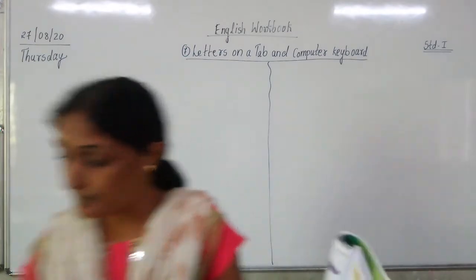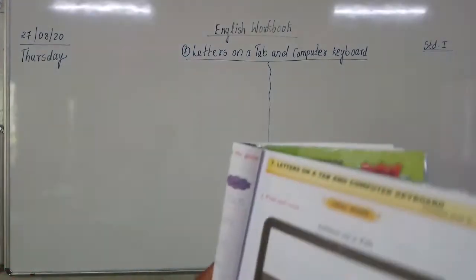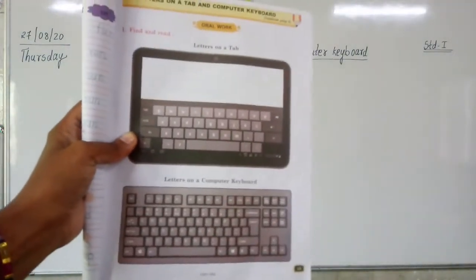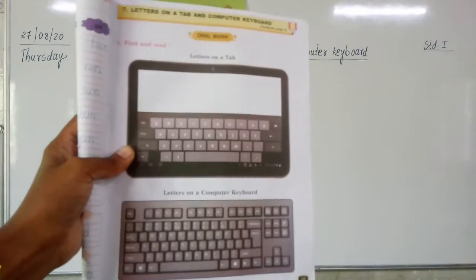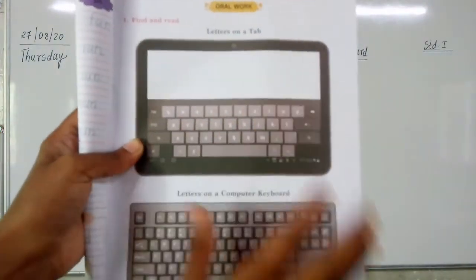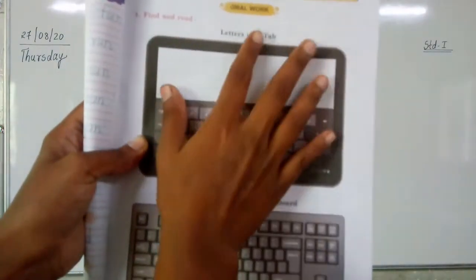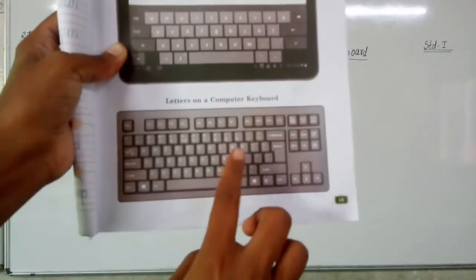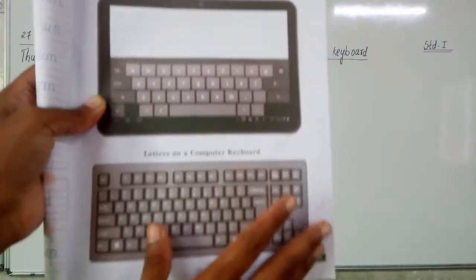In this lesson, on the first page nothing is there to do — only keyboards are shown. This keyboard is of the tab and this keyboard is of the computer.